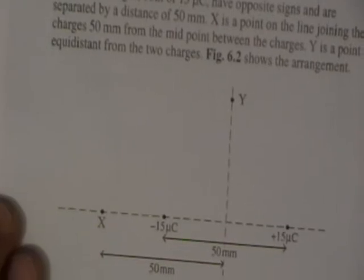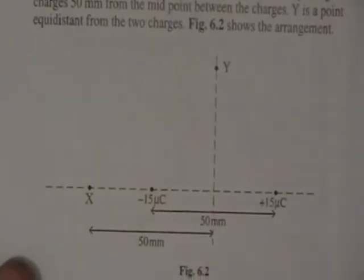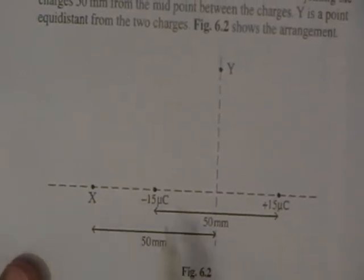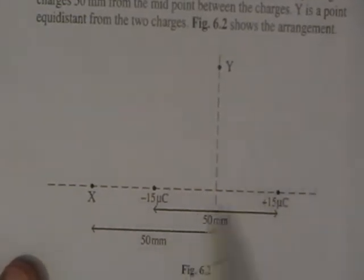We now have a question involving two point charges of plus 15 microcolumbs and minus 15 microcolumbs placed with a midpoint between the charges. There's a point Y and X is a point on the line that joins them. The distance between X and Y is 50 millimeters, and the distance between the two charges is 50 millimeters. So X is a further 25 millimeters beyond that. It asks us to mark the directions of the electric field strength at points X and Y.